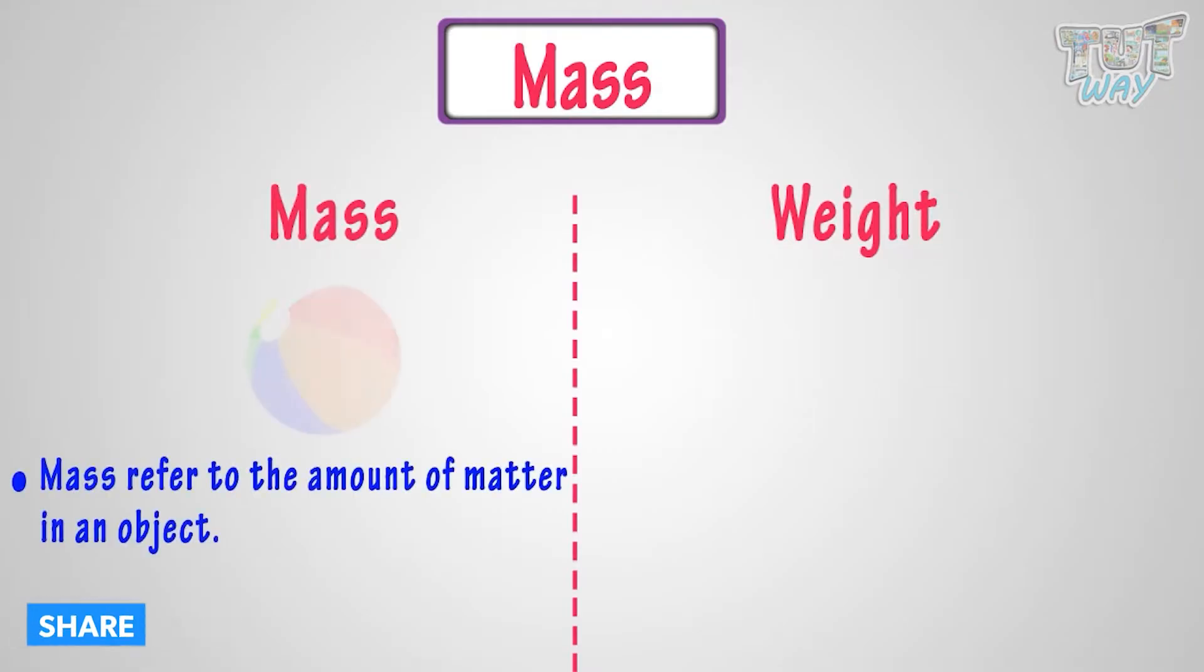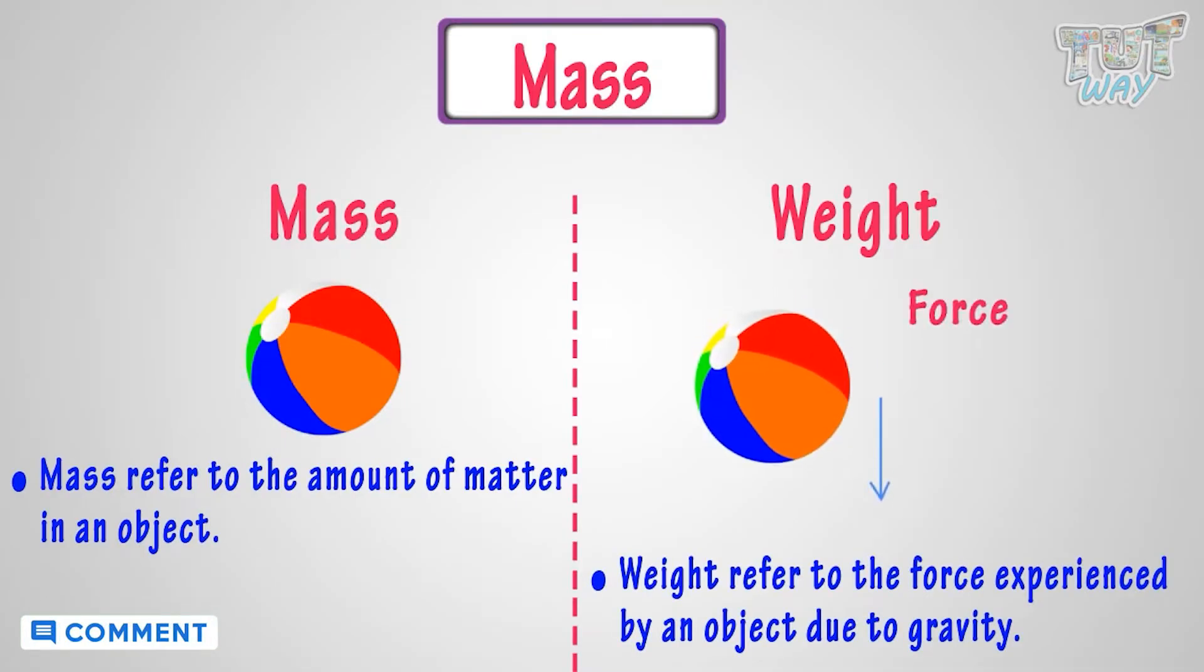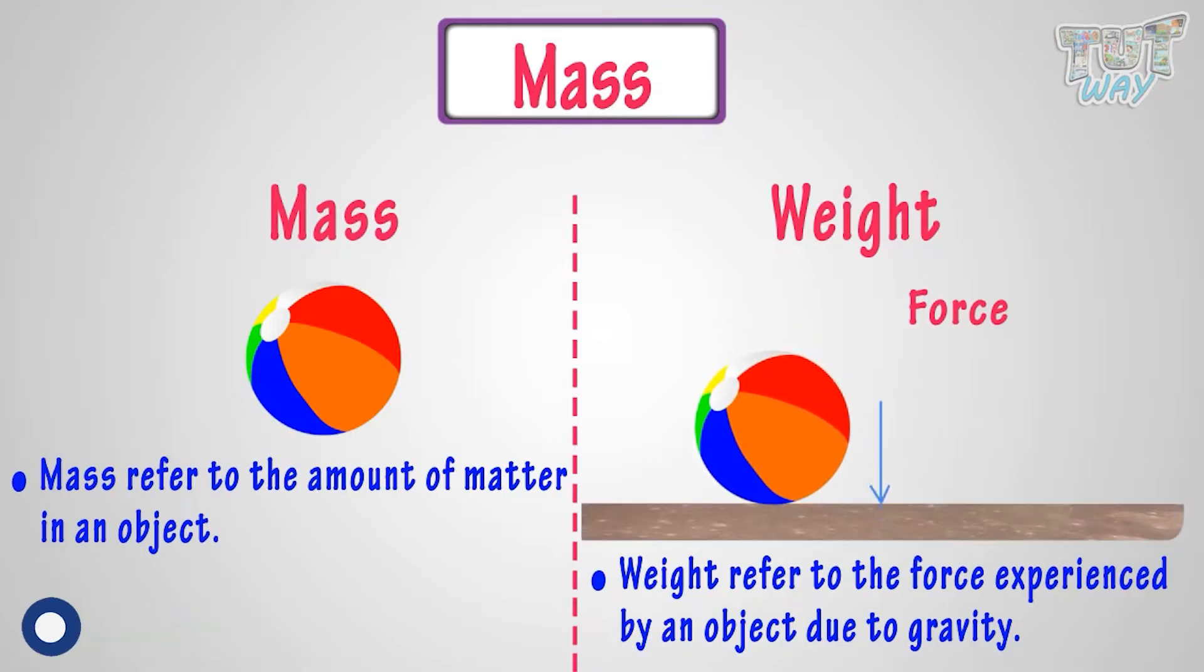Mass refers to the amount of matter in an object, and weight refers to the force experienced by an object due to gravity.